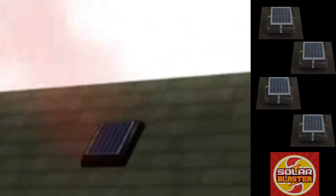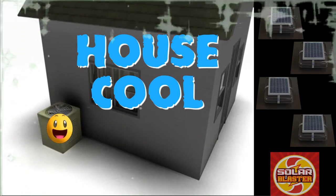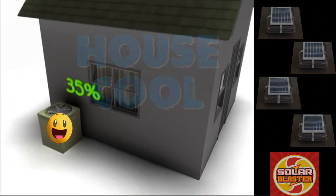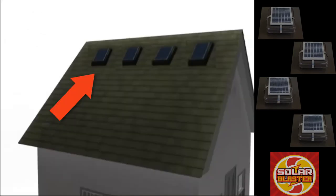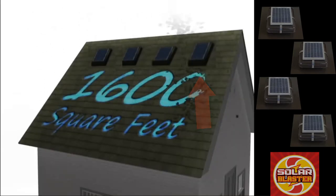This will dramatically reduce how long and hard your air conditioner has to work to keep your house cool, reducing cooling costs by as much as 35%. Four Solar Blasters will cover up to 1600 square feet of attic space.